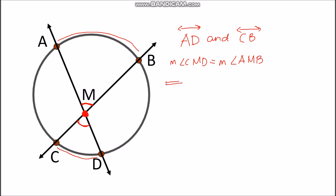To get the measurement of either of the two angles, we add the measurements of the arcs — measurement of arc AB plus measurement of arc CD — and then divide by 2, or get one-half of it.